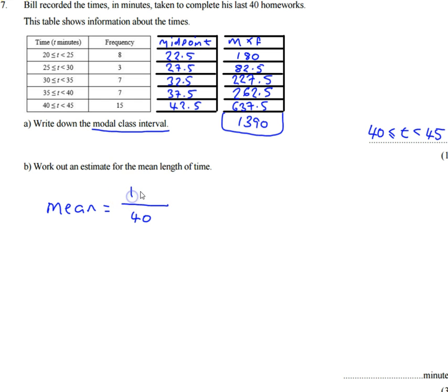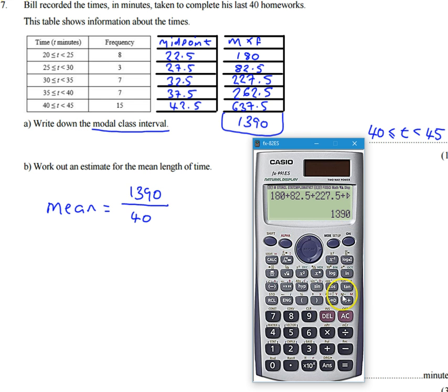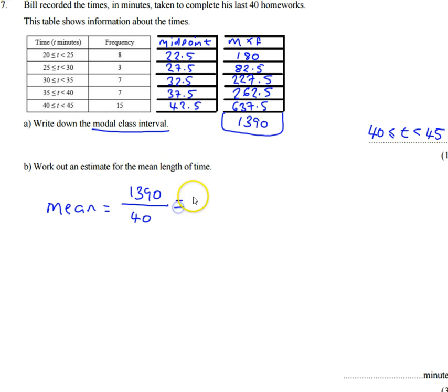And then my mean is going to be 1390 divided by 40. So I'm going to do my answer divided by 40. And that tells me that it's 34.75. So over here, I'm going to write my answer as 34.75 minutes.